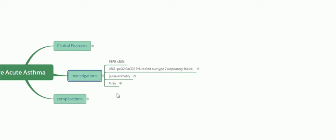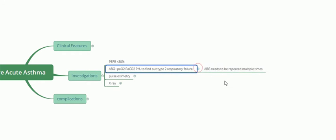PaO2 and PaCO2 give us a picture of whether the patient is going into type 2 respiratory failure. If so, mechanical ventilation may be required. Arterial blood gases need to be repeated multiple times to keep checking whether the patient is going into respiratory failure and whether mechanical ventilation will be required.